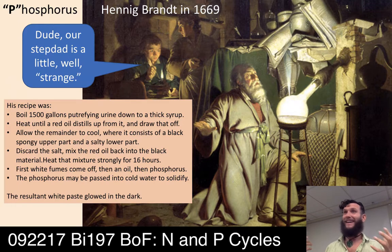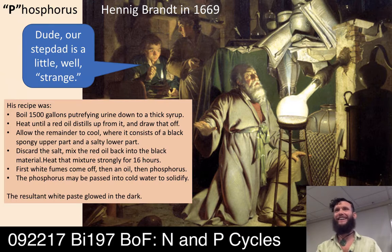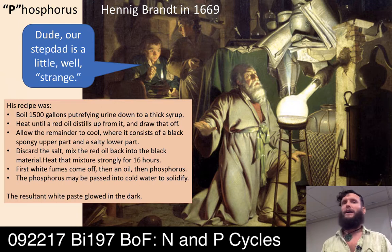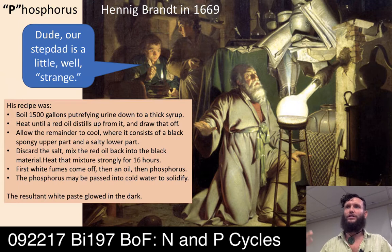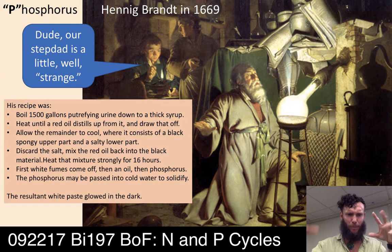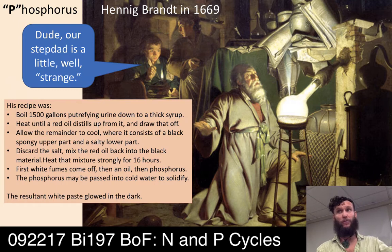He collected 1,500 gallons of urine from beer-drinking tavern goers, allowed it to putrefy and rot in his basement lab for a few weeks or a month until it smelled very ripe, then started boiling it down. He would boil it until the urine became a thick golden syrup, then put it under extreme heat until red oils distilled up.